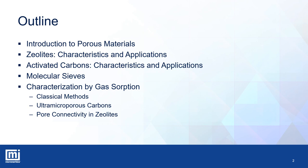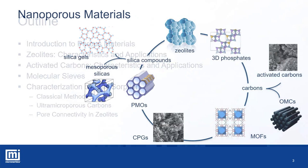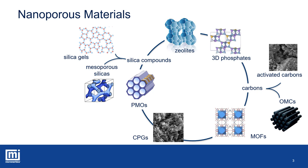If you think about porous materials, you might have a particular class in mind. Let's look at some prominent examples. There are zeolites — microporous aluminosilicate compounds. Other silica-based materials include amorphous silica gels and highly ordered mesoporous silicas. Related groups are periodic mesoporous organosilicas, also referred to as PMOs, which are distinctive due to organic groups within the walls. CPGs are controlled porous glasses — another type of silica-based porous material. There are also three-dimensional phosphates with similar structures and porosities to zeolites. Looking at carbons, besides well-known activated carbons, there are ordered mesoporous carbons, often referred to as OMCs.